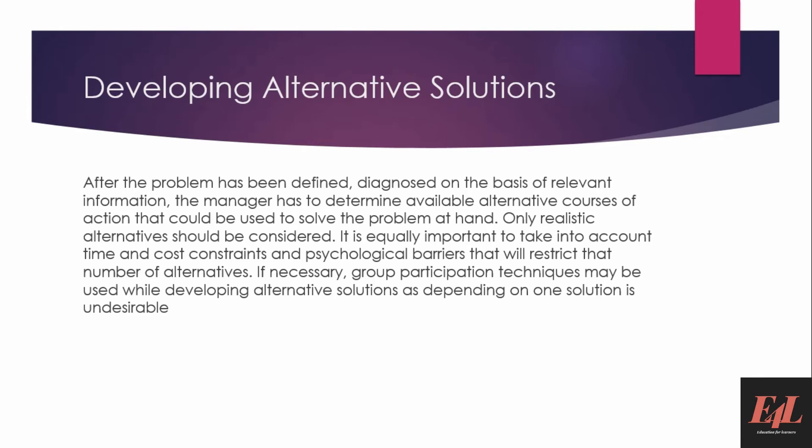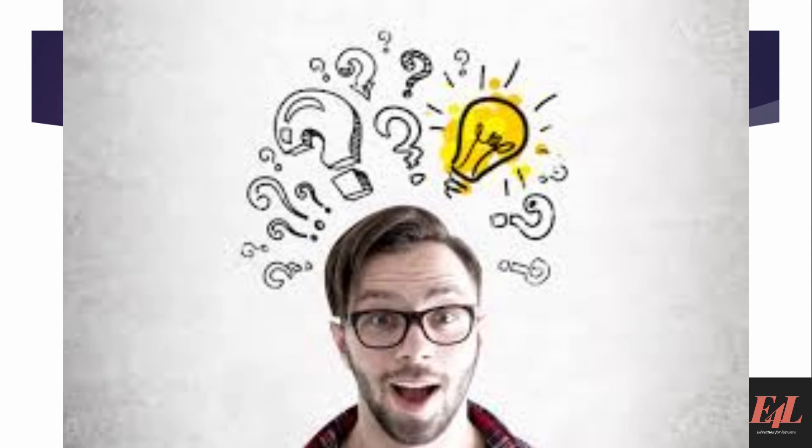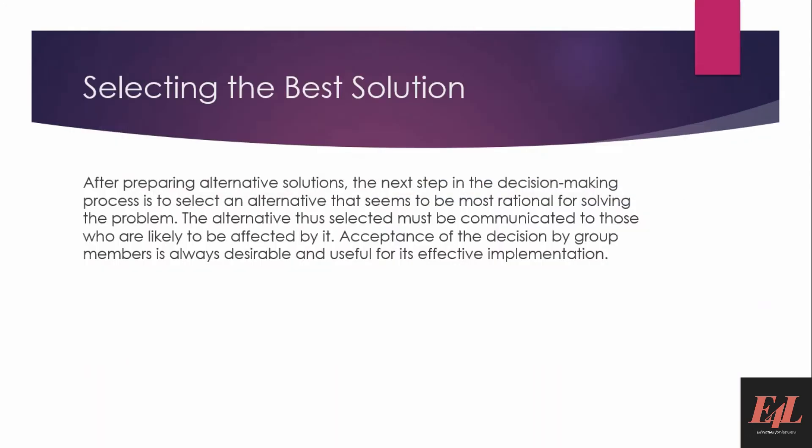Selecting the best solution: after preparing alternative solutions, the next step in the decision-making process is to select the alternative that seems most rational for solving the problem. The alternative selected must be communicated to those who are likely to be affected by it. Acceptance of the decision by group members is always desirable and useful for its effective implementation.